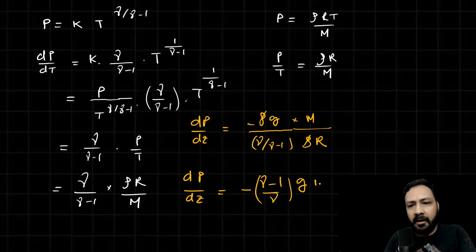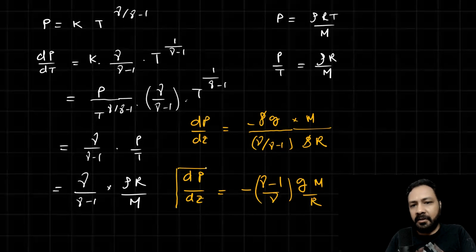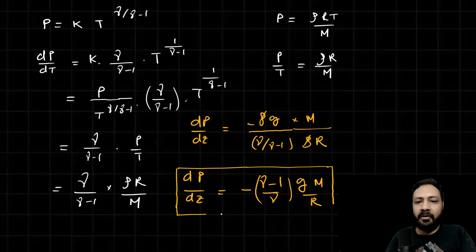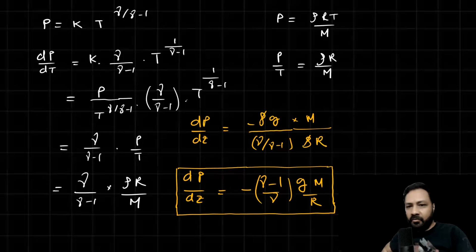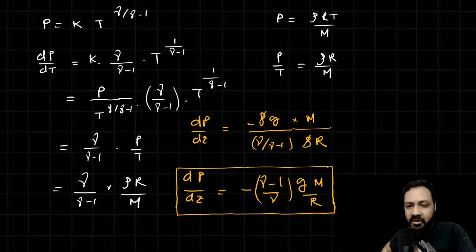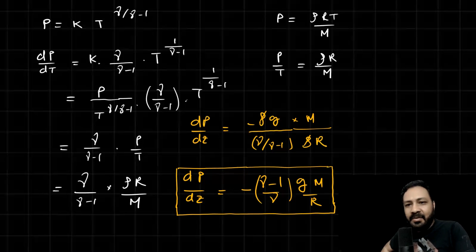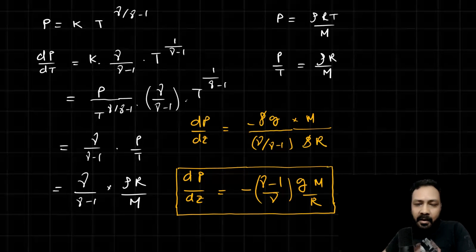The expression for dT/dz becomes: -[(γ-1)/γ] · (gM/R). A good thing about this expression is that it is independent of height, so as long as g is approximately constant, the adiabatic lapse rate is constant. This means temperature decreases linearly with height, and that is what we will use.